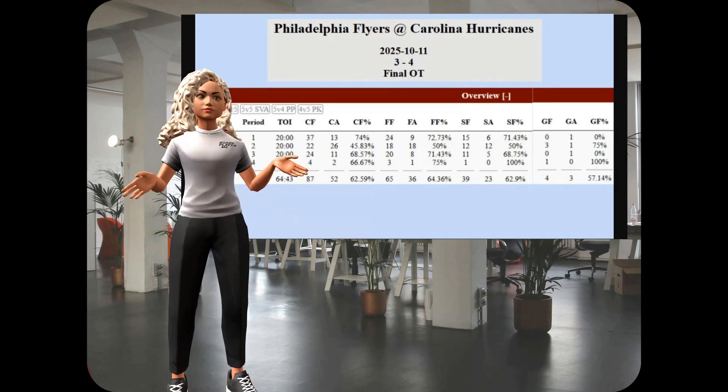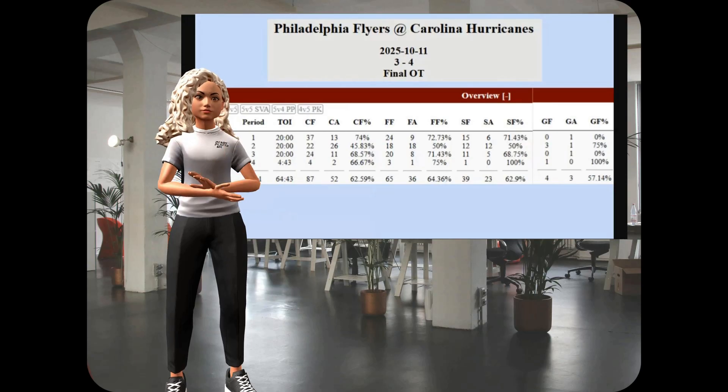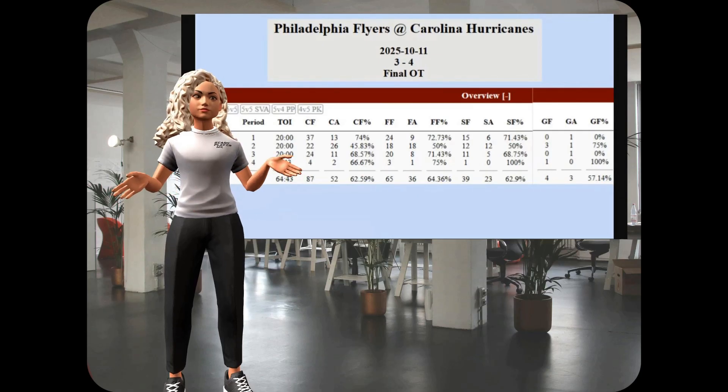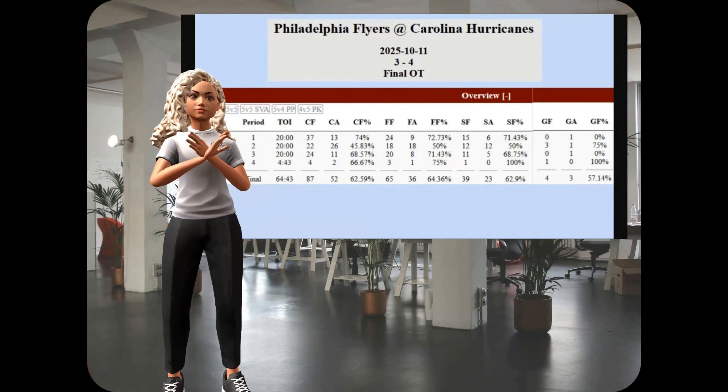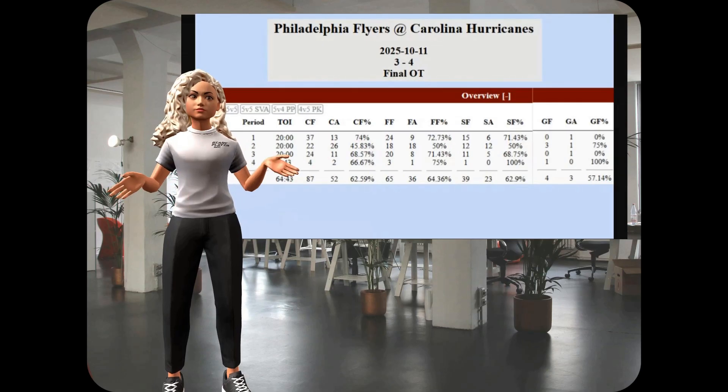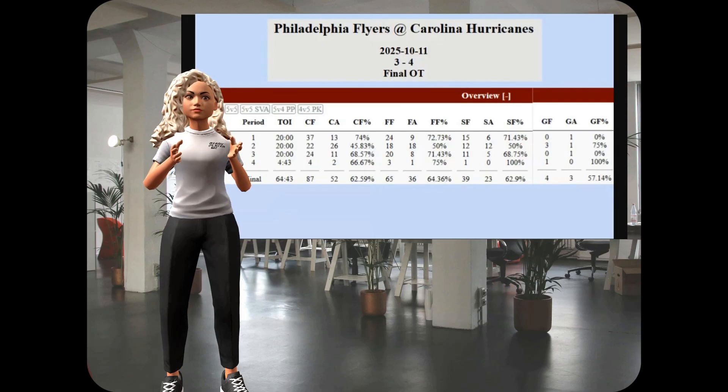And so, you can kind of see the progression during each period of how the Canes played, how they dominated possession, and how it resulted in goals or didn't result in goals. And this particular stat line is interesting because we can see that the Canes dominated puck possession in periods 1, 3, and in overtime. And yet, in the one period where the Philadelphia Flyers had the best puck possession, happened to be the period where the Canes scored 3 out of their 4 goals.